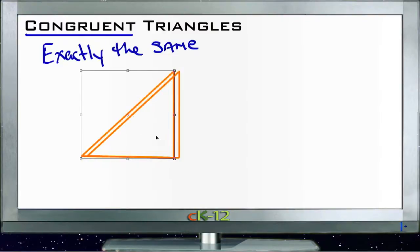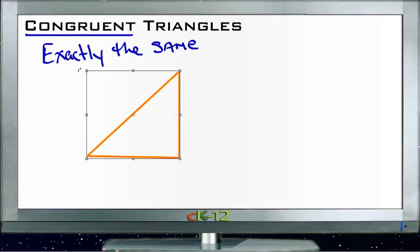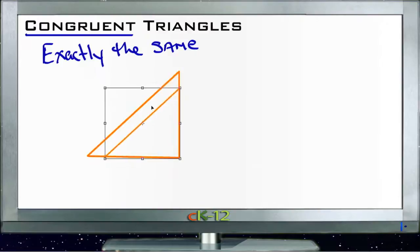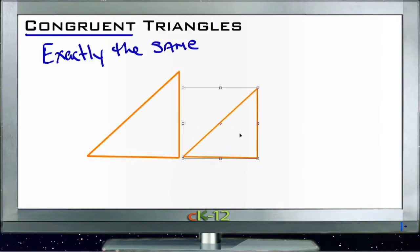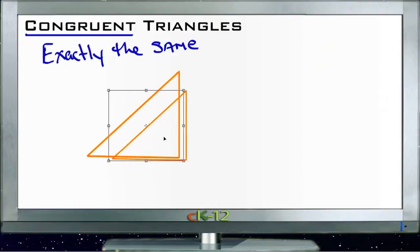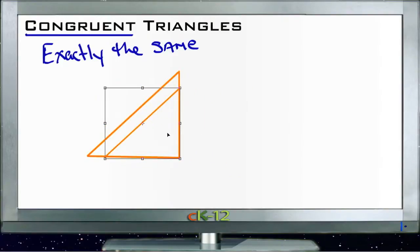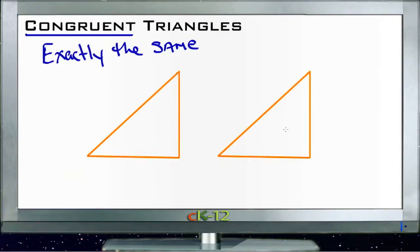Now if one of these triangles was almost the same - say it sat on top but was just a little bit smaller - then these two triangles would be similar, because they are the same shape but they're not congruent unless they're exactly the same in every way: size and shape - not necessarily color, but in any way that matters mathematically.